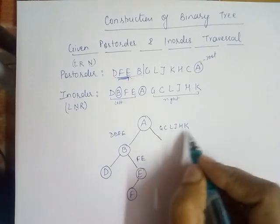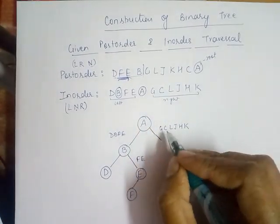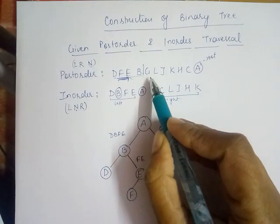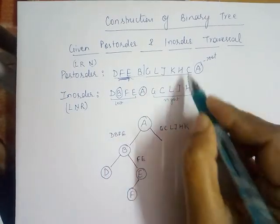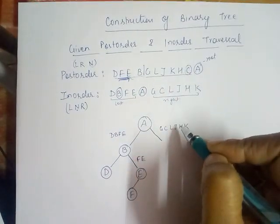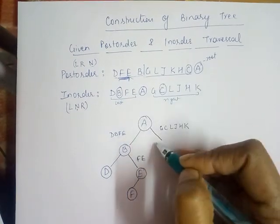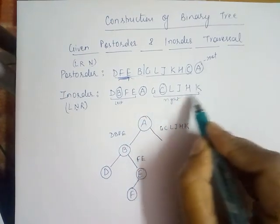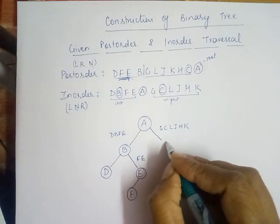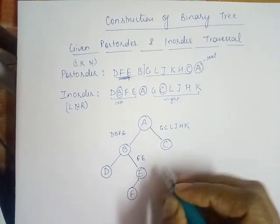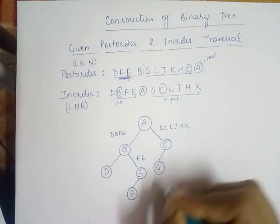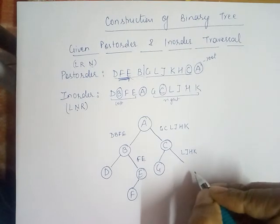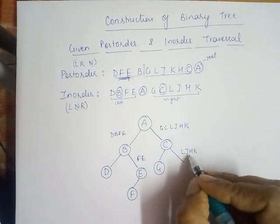Now we construct the right side of root node 'a'. In the postorder, for the sequence 'gcljhk', 'c' comes last, so 'c' becomes the node. The left part of 'c' is 'g', which becomes the left child, and the remaining sequence 'ljhk' becomes the right child of 'c'.